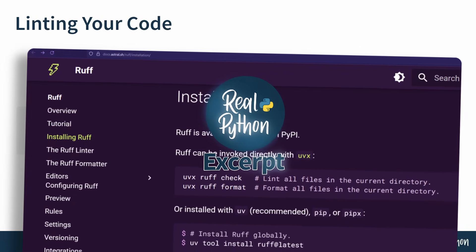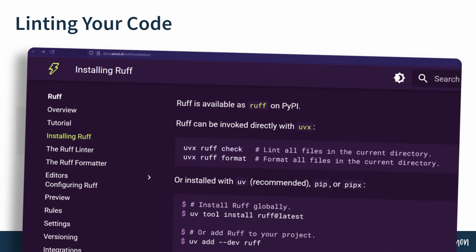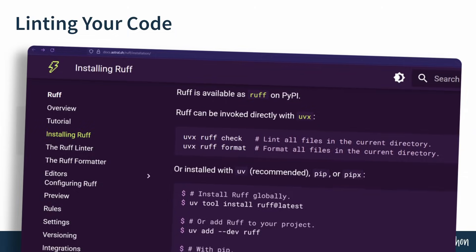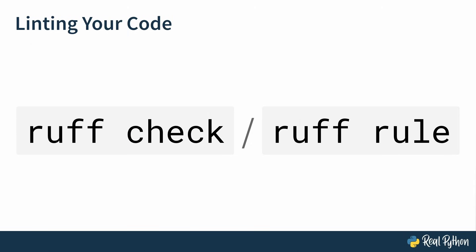Now that you've installed ruff, you're ready to start using it to check your code for linting errors. You will do that with a subcommand ruff check. It might happen that you will lint your code and ruff reports a linting error that you've never seen before and don't really understand. So you will also learn how to use the subcommand ruff rule to get more information about that error.